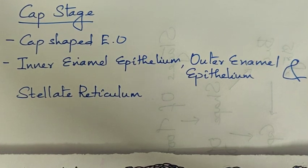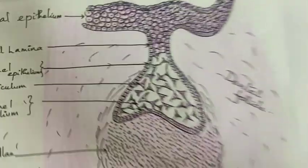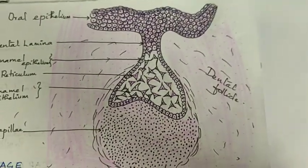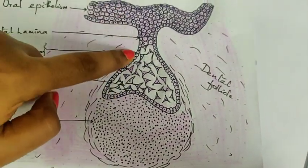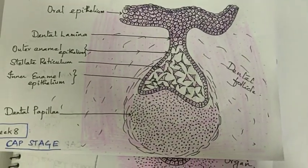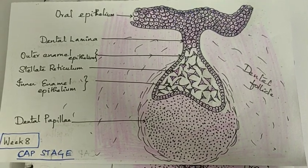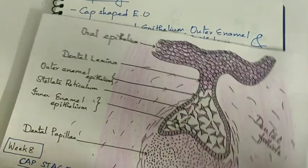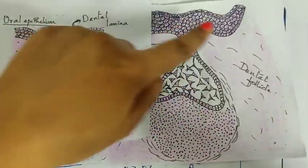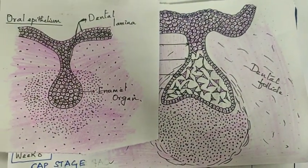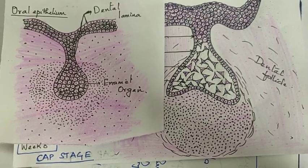This mesenchyme condensation triggers selective proliferation of the enamel organ cradling the dental papilla, forming the cap stage. In the cap stage, the enamel organ has a cap-like shape with three layers: an inner enamel epithelium, a stellate reticulum, and the outer enamel epithelium. Accumulation of fluid or intercellular edema separates the polygonal cells, with cells held together by their intercellular junctions, forming the stellate reticulum cells.